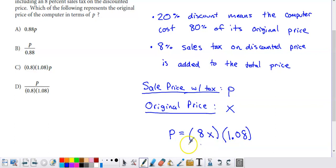If I wanted to solve this for X, all I would do is I would divide P by 0.8 and by 1.08. And if you look at option D, that's exactly what we see. So definitely kind of weird, pretty tricky. Hopefully this discussion has helped.